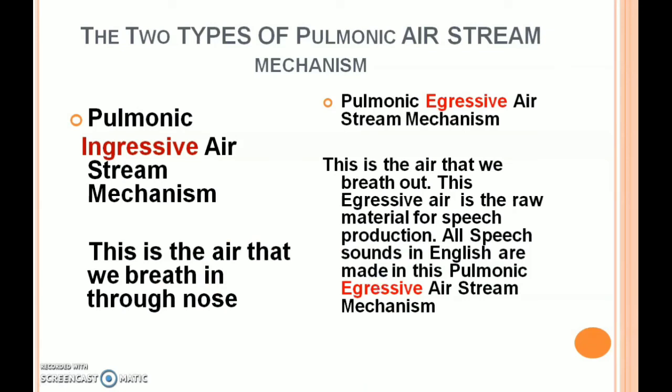The pulmonic ingressive airstream mechanism is the air that we breathe into the lungs through the nose. The pulmonic egressive airstream mechanism is the air that we breathe out. This egressive air is the raw material for speech production. All speech sounds in English are made using the pulmonic egressive airstream mechanism, so this is most important for the production of speech sounds.